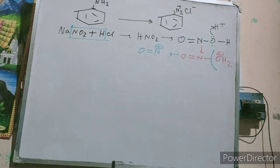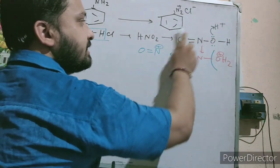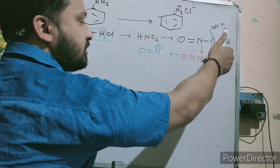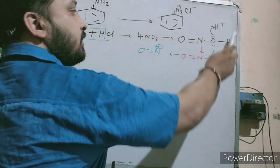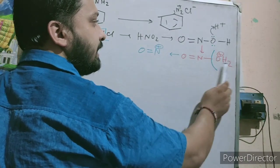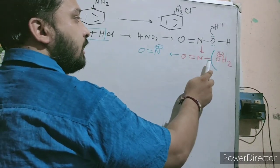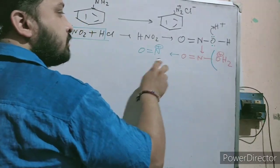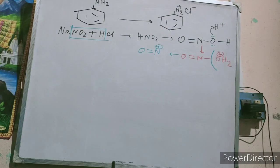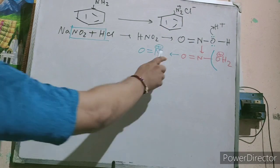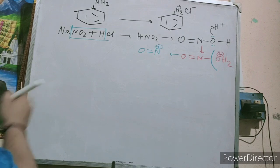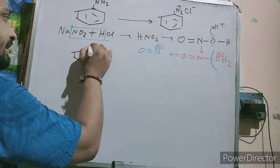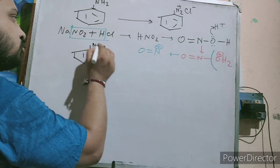So from NaNO2 and HCl you prepare HNO2. You can write HNO2 in this structural form. If you protonate it, it forms H2O, and since H2O is a good leaving group, it removes. When it removes from here, N gives you a positive sign — this is NO+.